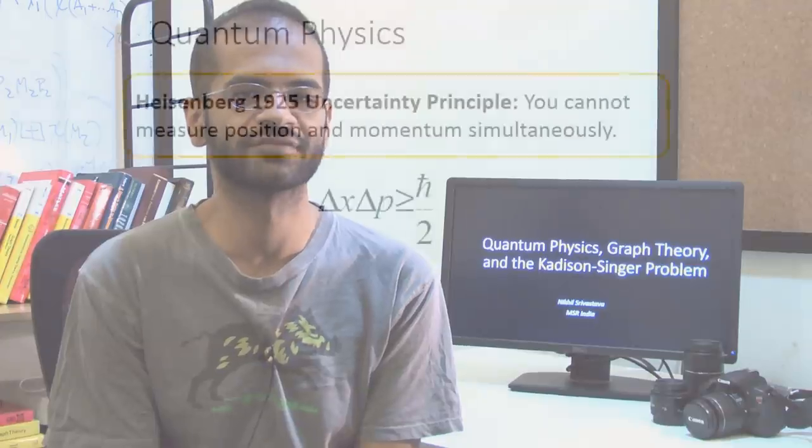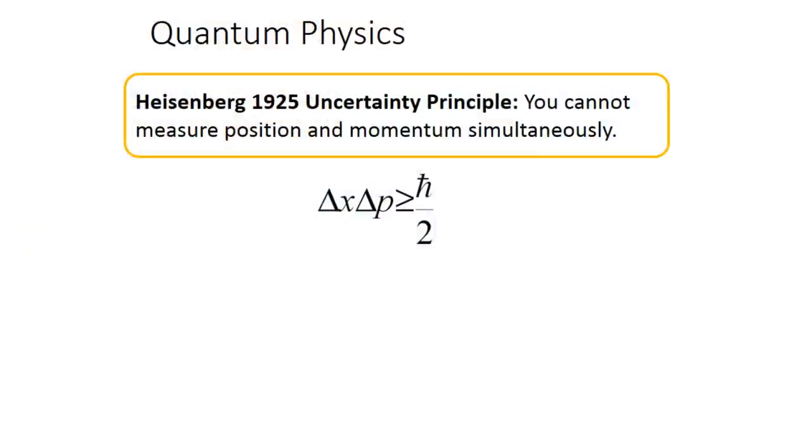The uncertainty principle says that if you have a particle, it's not possible to exactly measure both its position and its momentum simultaneously in an experiment.